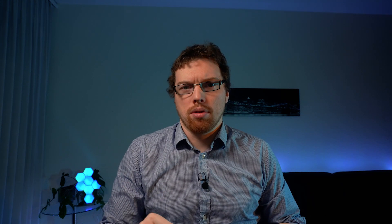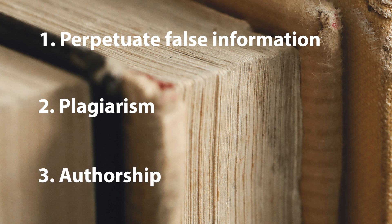However, let's stick to the conversation about scientific research. There are three main issues that arise from AI-written research papers: one, the perpetuation of false information; two, plagiarism; and three, authorship. Let's discuss each of these in detail.